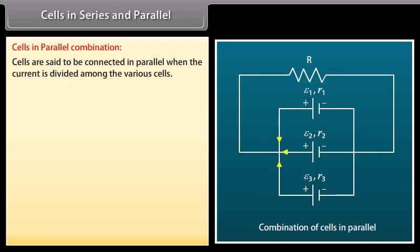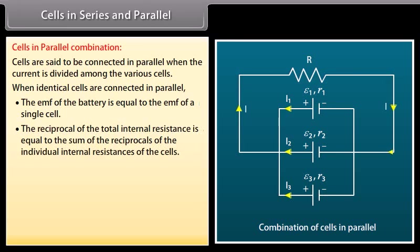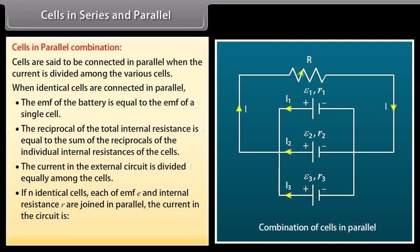In a parallel combination, all positive terminals are connected together and all negative terminals together. When identical cells are connected in parallel, the EMF of the battery equals the EMF of a single cell, and the reciprocal of total internal resistance equals the sum of reciprocals of individual internal resistances. The current in the external circuit is divided equally among the cells. For N identical cells in parallel, the current is NE / (NR + r) — wait, NE / (Nr + R).